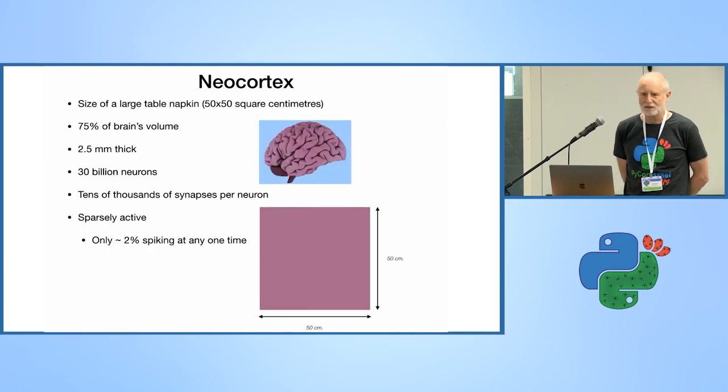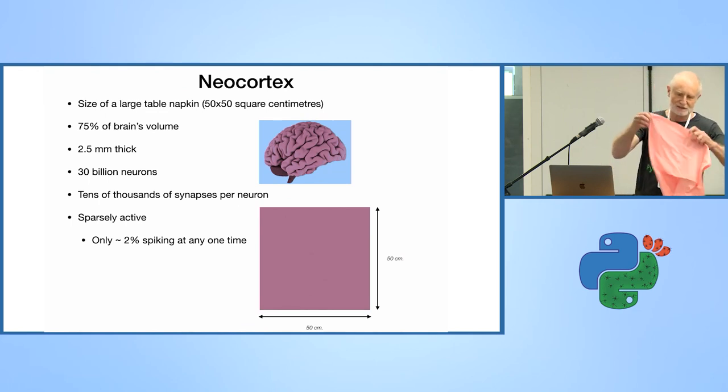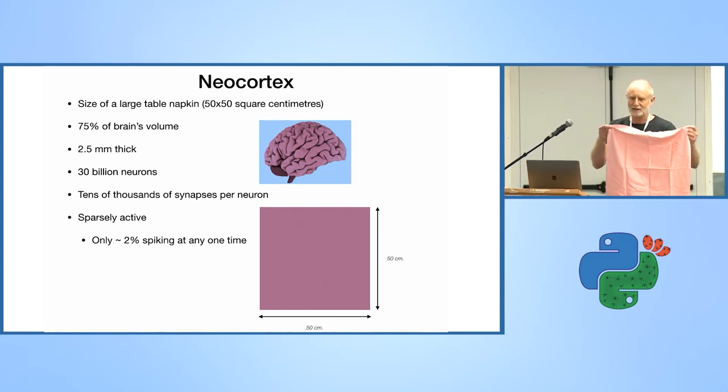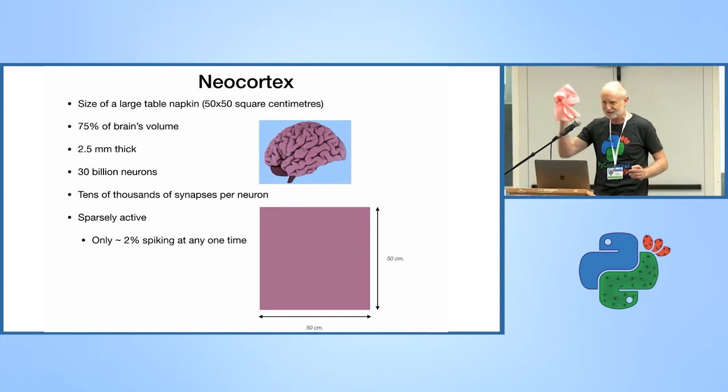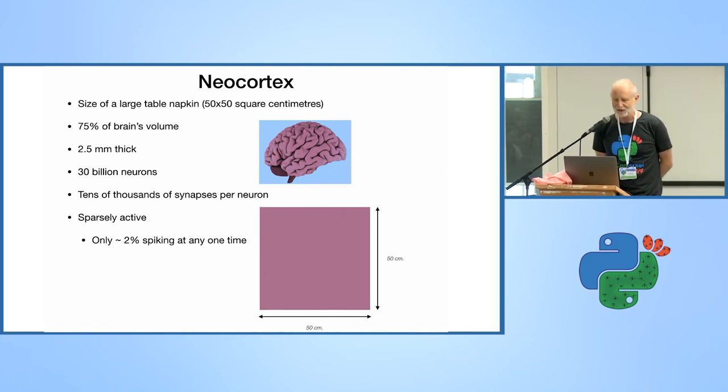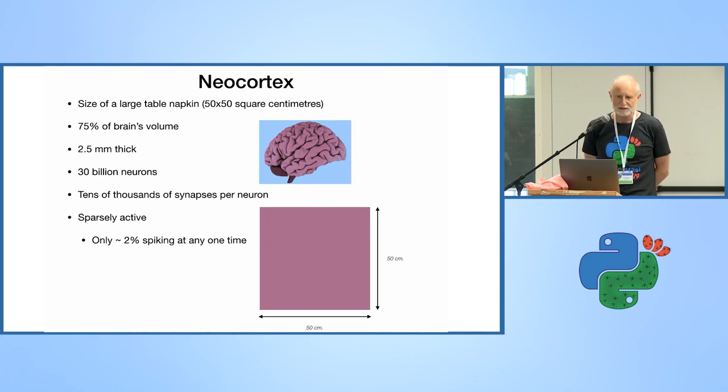Let's talk about the neocortex. It's about 75% of your brain. It's a thin layer about two and a half millimeters thick. If I would unwrap it and fold it out, this is about what you would get. So this is your neocortex. It's got billions of neurons and tens of thousands of synapses from the neurons. The important thing is that it's only 2% of your neurons at any one time that are active. This is how your brain succeeds in doing a lot of things with very little power.